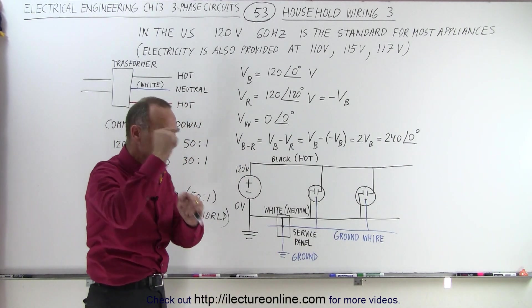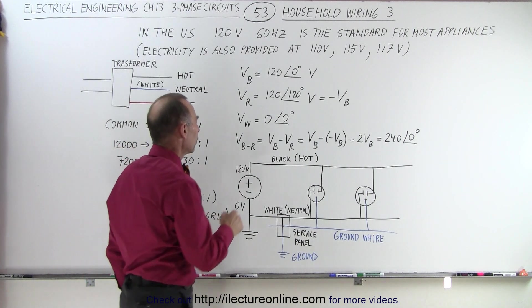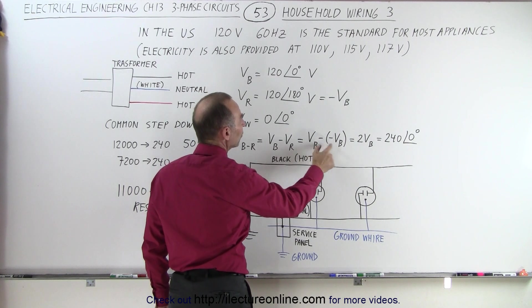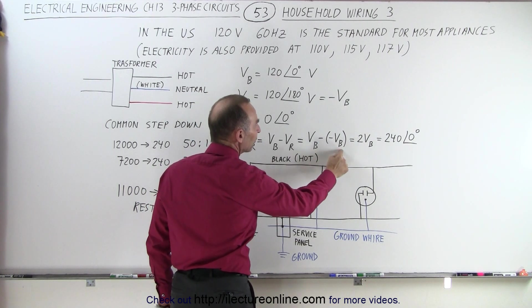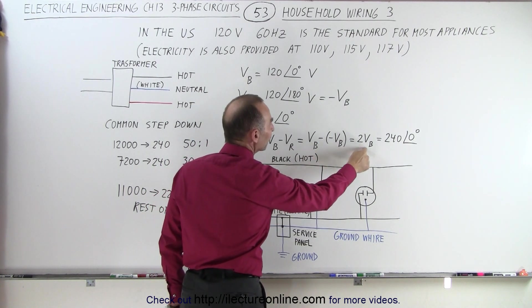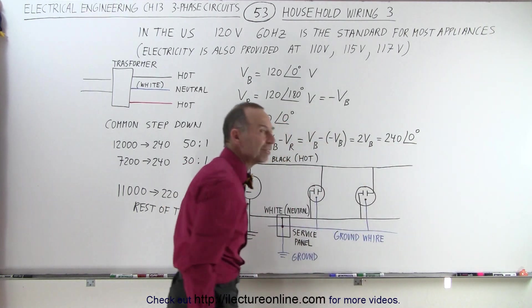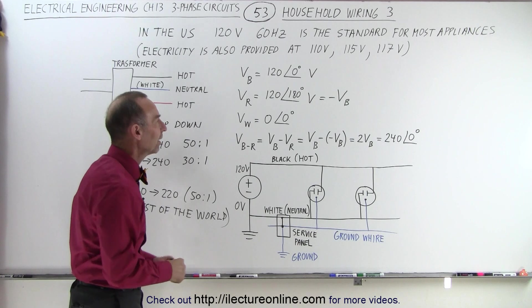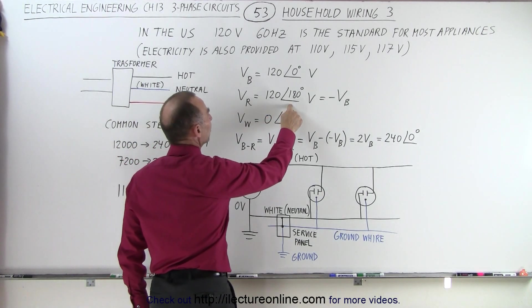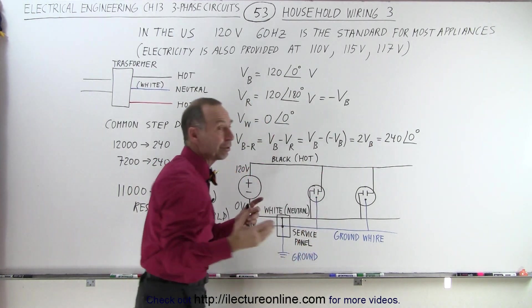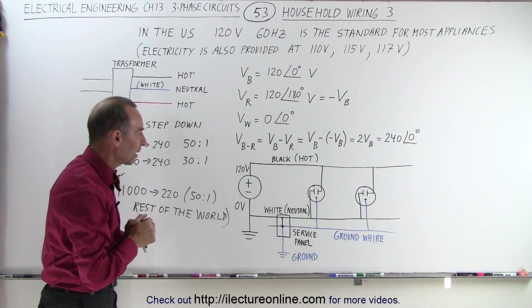So what happens when you connect from red to black? Notice the potential difference will be VB minus V red, VB minus V red which is the negative of VB, which essentially is twice VB or 240 volts at zero degrees phase angle. So the way that's then connected, since the red is at 180 degree phase angle relative to the black, when you connect from black to red you'll end up with 240 volts at zero degree phase angle.